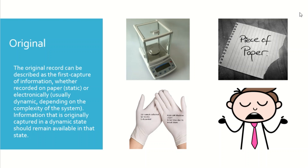Similarly, on the shop floor we sometimes use blank sheets apart from batch records and record data on them. If you lose that paper, you lose the value. Even if you don't lose it and try to transcribe from it to the original document, that is also not acceptable. Sometimes data is written on gloves or aprons that are then washed or discarded — again, this does not follow the rule of original.